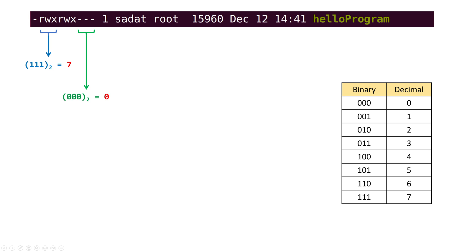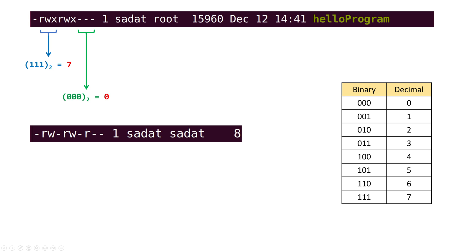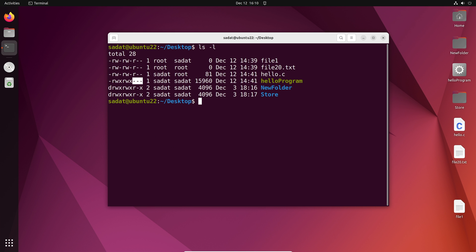Now let's see another example. In this case, I want to give the user read and write, but not execute. So that would be 1, 1, 0. For 1, 1, 0 the conversion is six. So you know how it works. You see all the combinations — so depending on if you want to give them read, write or execute, you can change these numbers. So let's go back to our VM.